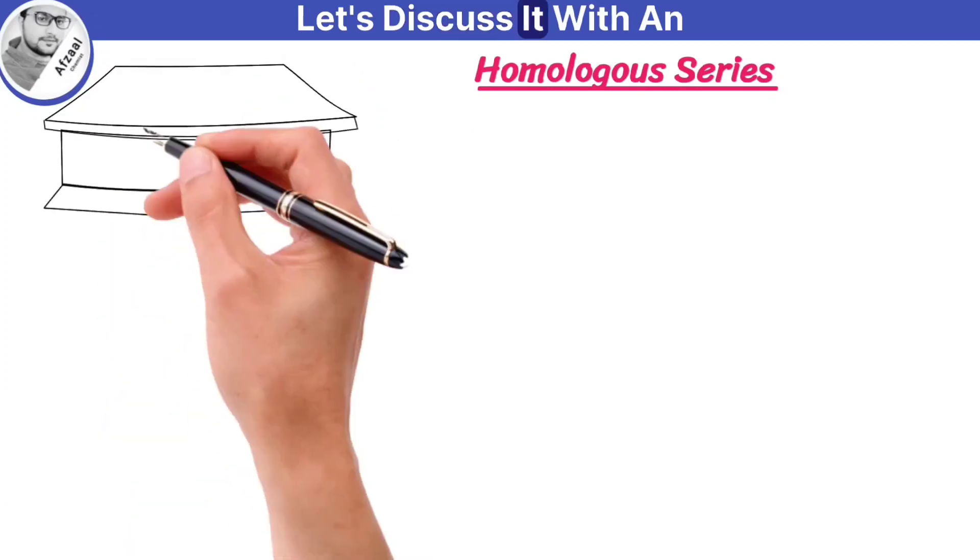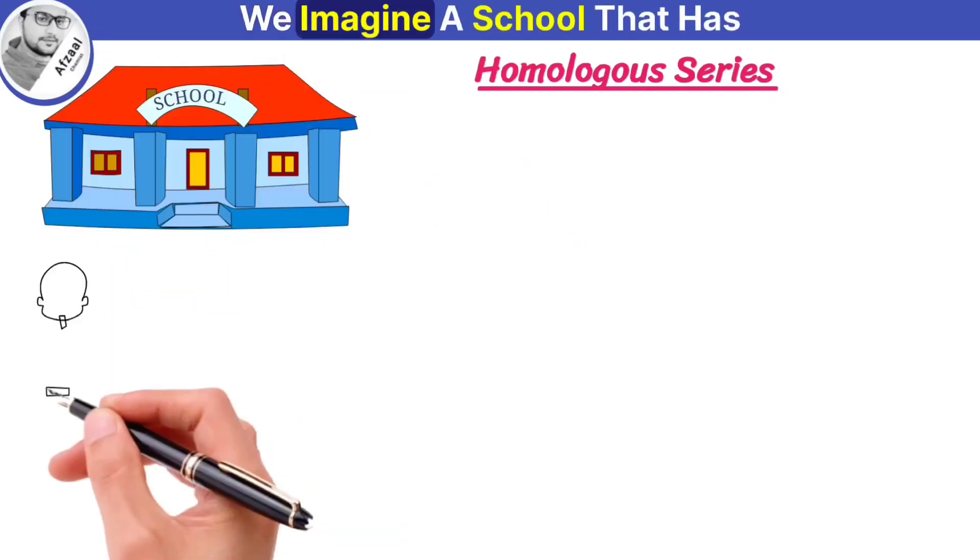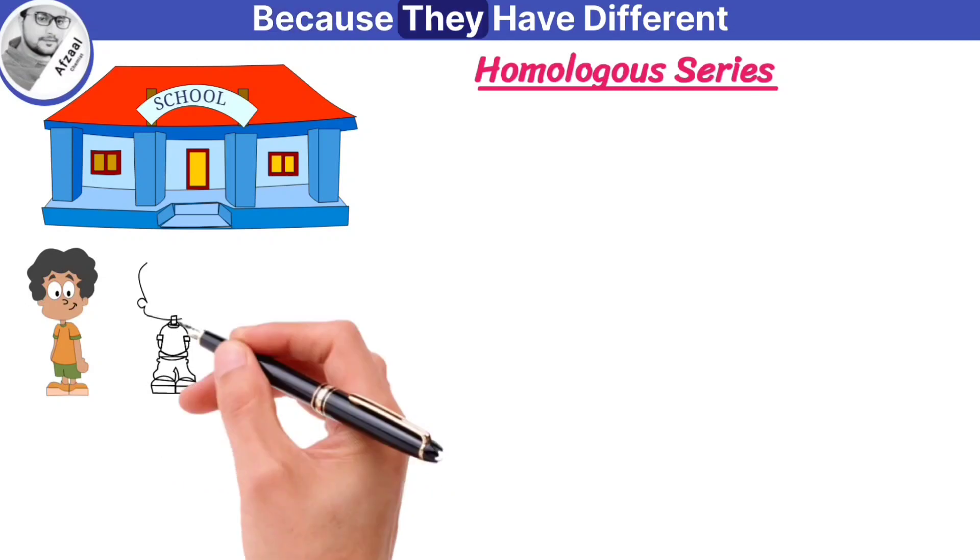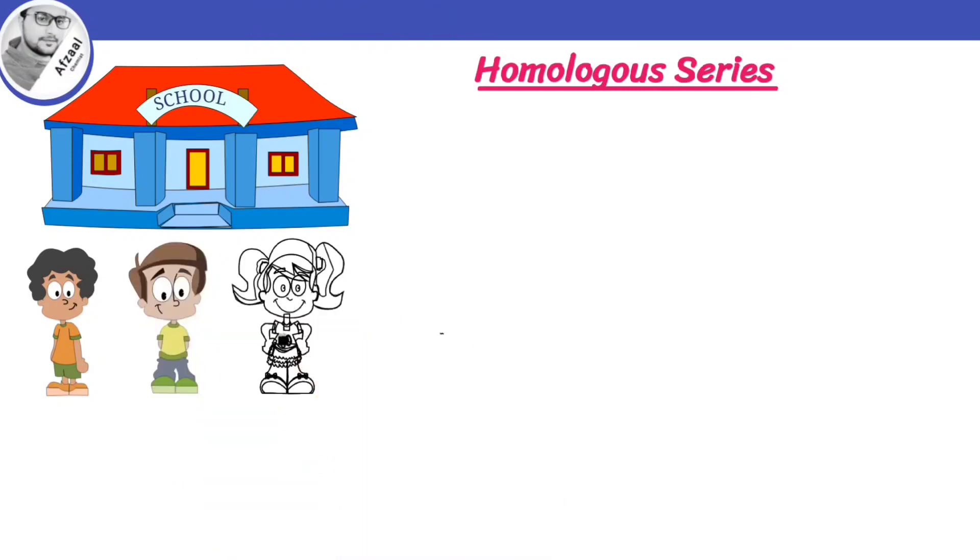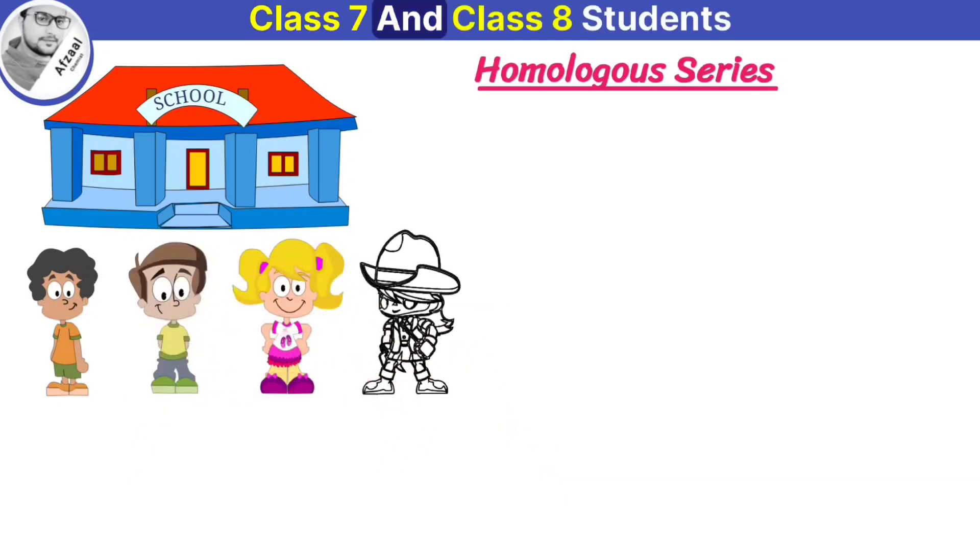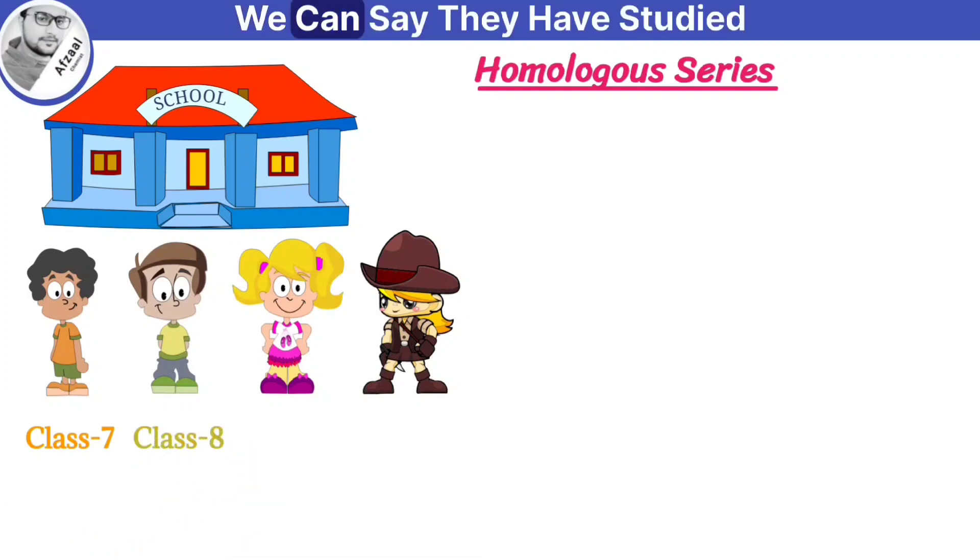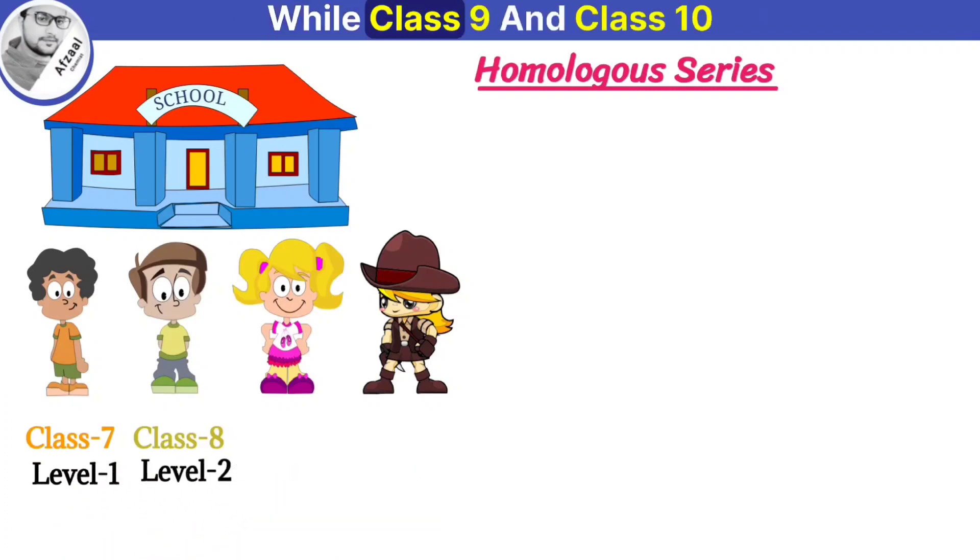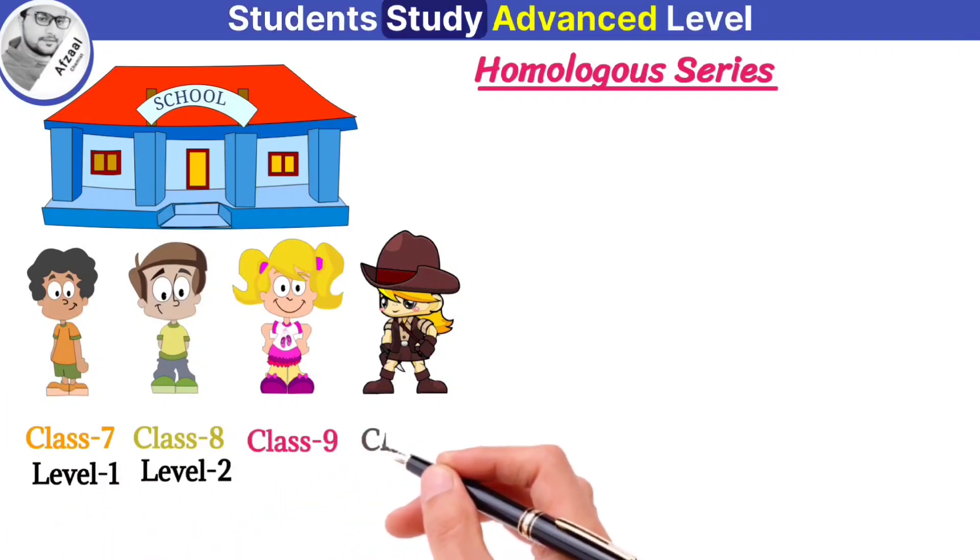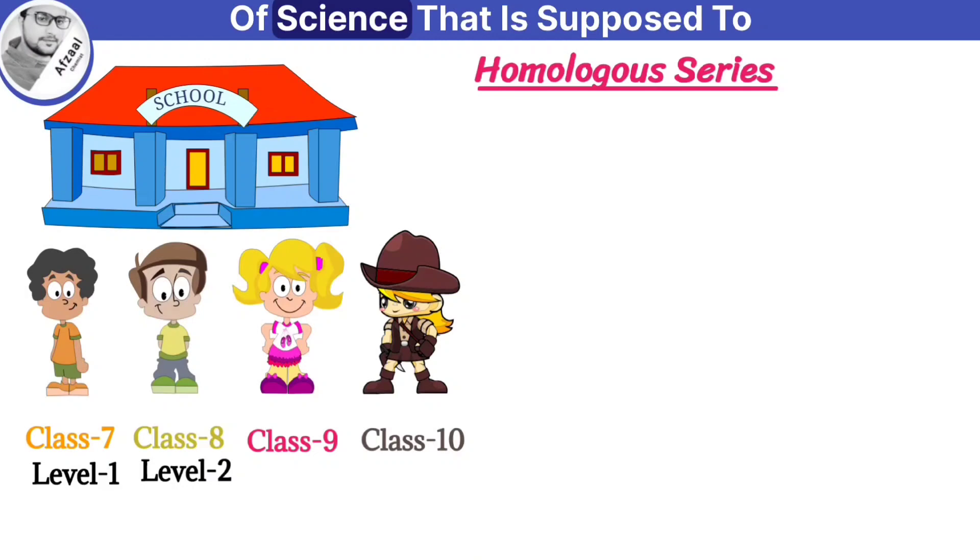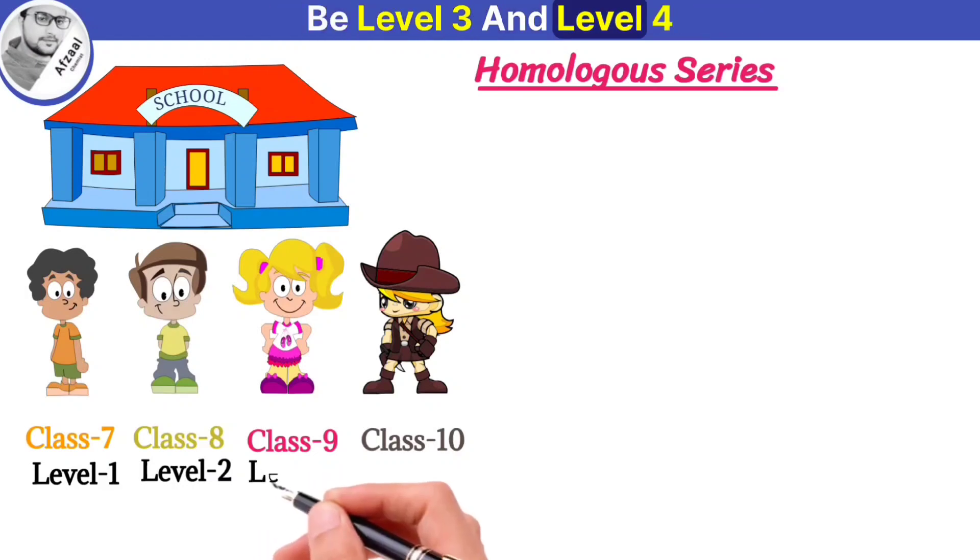Let's discuss it with an example. We imagine a school that has students of different classes because they have different levels of studies. For example, class 7 and class 8 students study a very basic level of science. We can say they have studied level 1 and level 2 science. While class 9 and class 10 students study advanced level of science that is supposed to be level 3 and level 4.